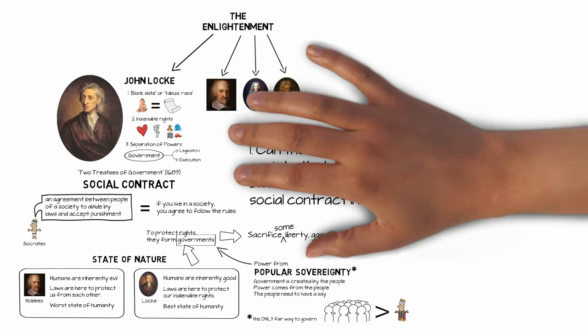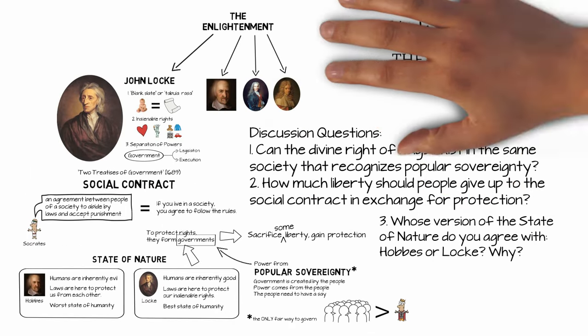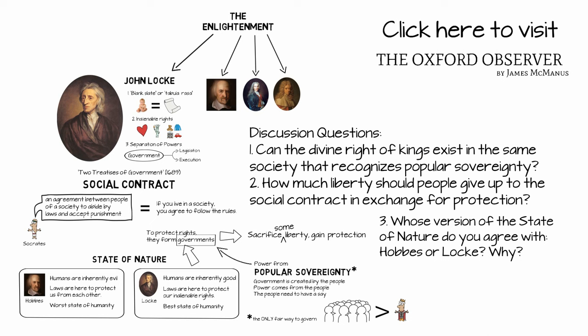Okay, time for some discussion questions. 1. Can the divine right of kings exist in the same society that recognizes popular sovereignty? 2. How much liberty should people give up to the social contract in exchange for protection of their inalienable rights? 3. Whose version of the state of nature do you agree with, Hobbes or Locke? Why?